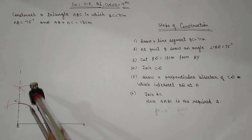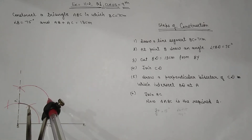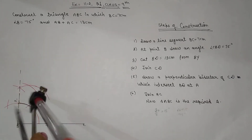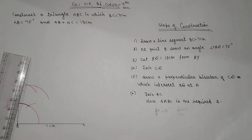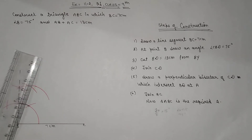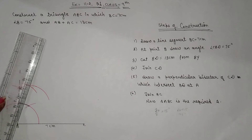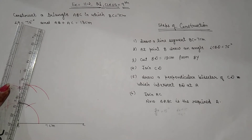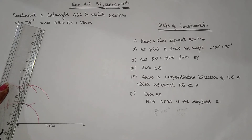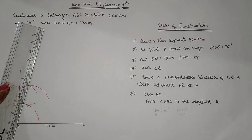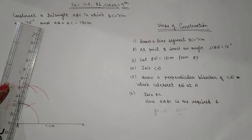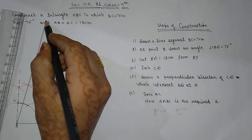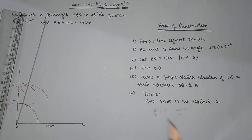Between the 60 degree arc and the 90 degree arc, you place another arc. From the 90 degree first arc, you join to get 75 degrees here. Then we take a ray and mark 13 cm on this ray.